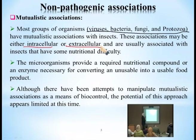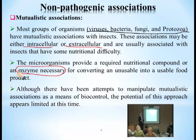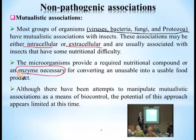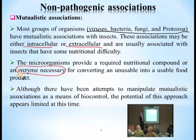In a mutualistic association, the microorganism provides a required nutritional compound, such as an enzyme necessary to convert unusable food into a usable food product. This is the goal: the microorganism uses enzymes to increase or change a food product that the insect otherwise cannot utilize.